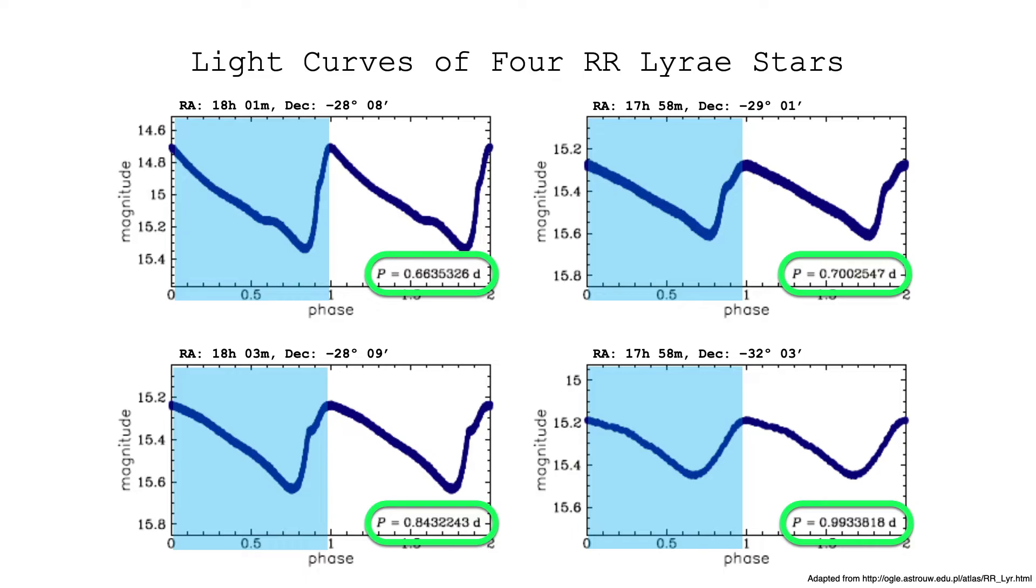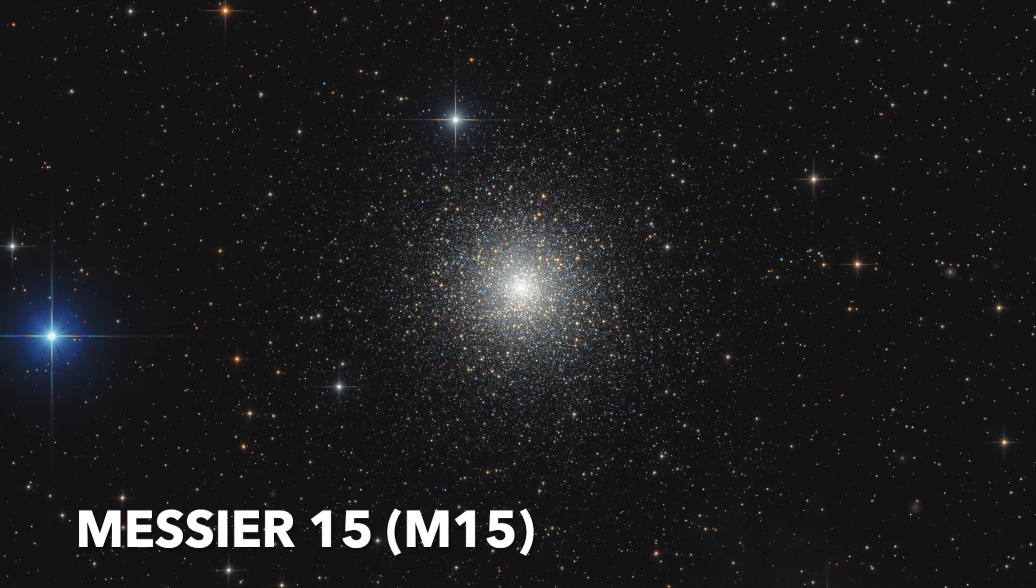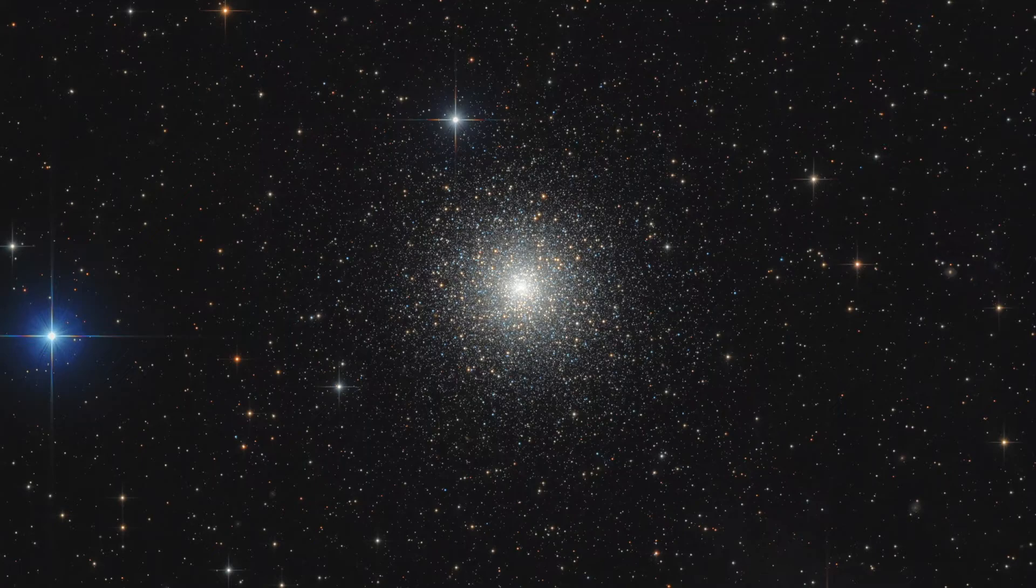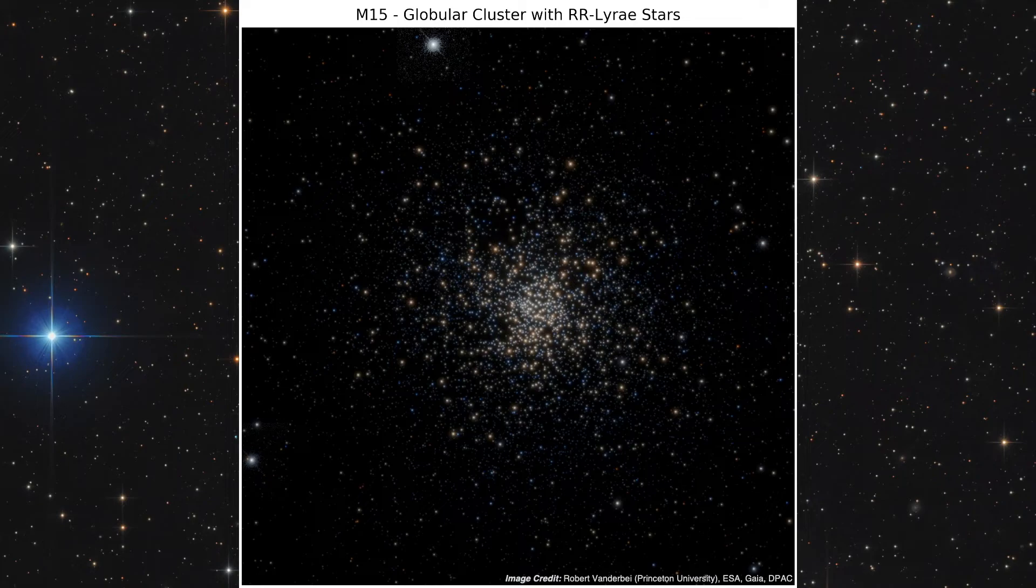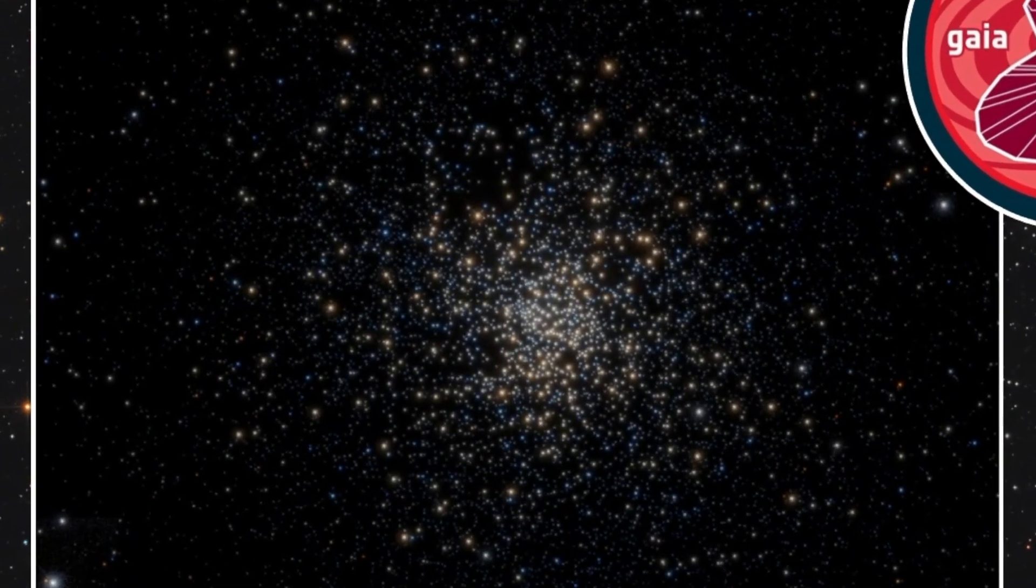Now, where else are we likely to see these RR Lyrae variable stars? Here's an image of the globular cluster Messier 15, or M15, featuring over 100,000 stars that are gravitationally bound to one another. We'll learn more about globular clusters later, but for now, know that these structures are where we're most likely to find these RR Lyrae variable stars. This is an animation showing the various RR Lyrae stars in M15, produced by using observational data from the Gaia satellite. If the variable stars are a little bit hard to see, let's zoom in to really make them pop.